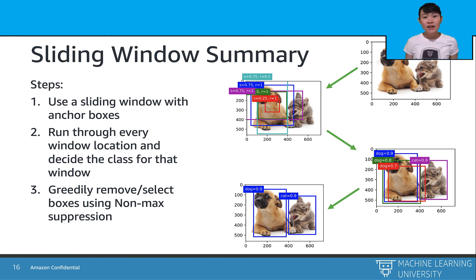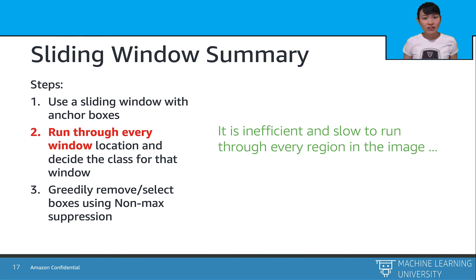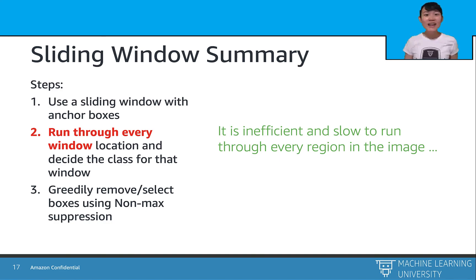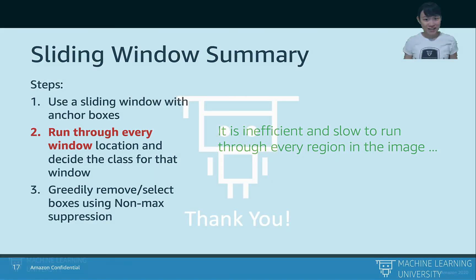However, here is another problem. If we generate a lot of anchor boxes and run through every pixel window, it might be too computationally expensive. We will introduce the RPN model in the next lecture to address this.